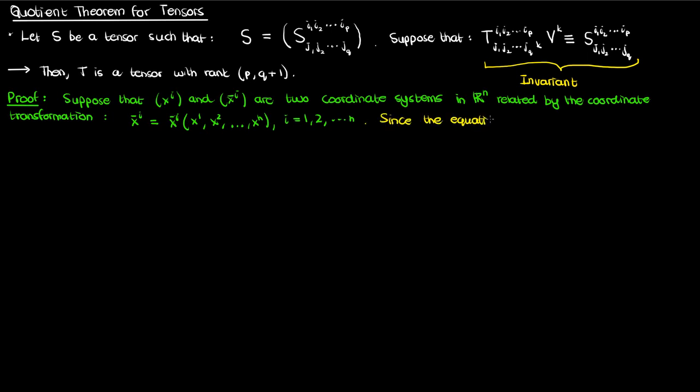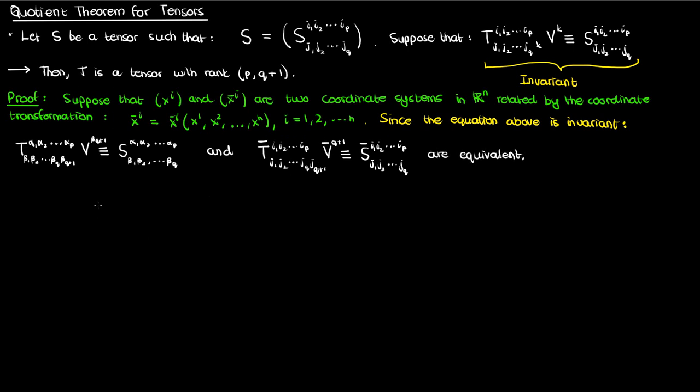We'll begin this proof by noting that since the equation is invariant, writing everything down in terms of the barred or transformed coordinate system should not change the equation. It's now become tradition in my tensor videos to use barred variables to denote the values of the variables post transformation, so the barred equation and the unbarred equation are equivalent.